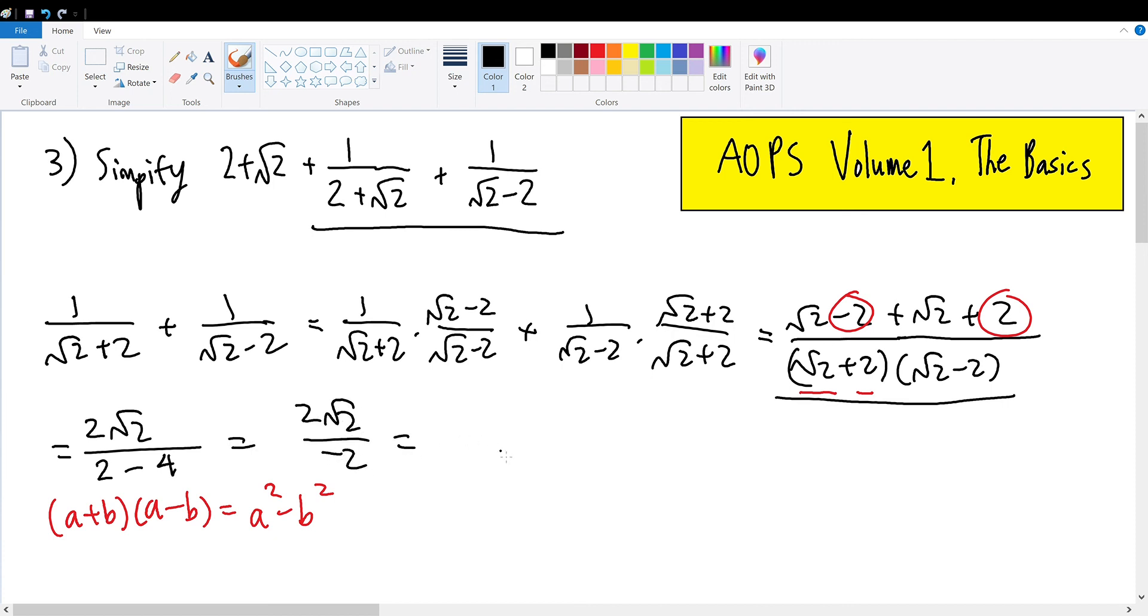Which can be simplified to be -√2. And now that we've simplified this fraction, we must combine -√2 with 2 + √2. So 2 + √2 - √2...